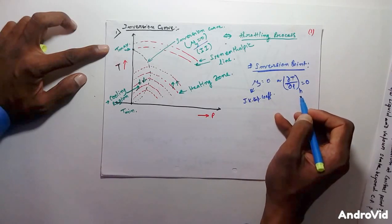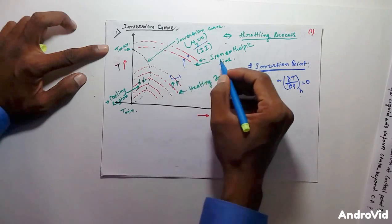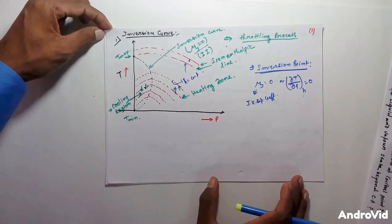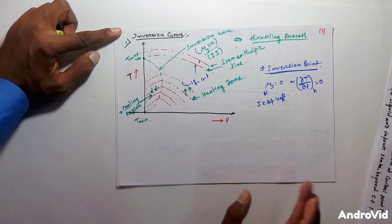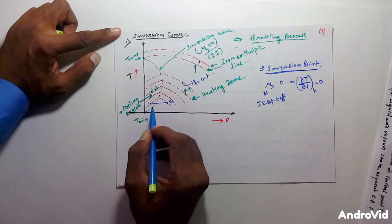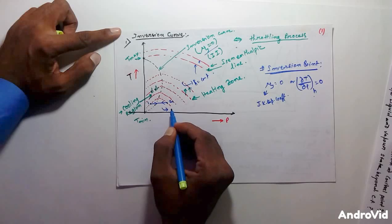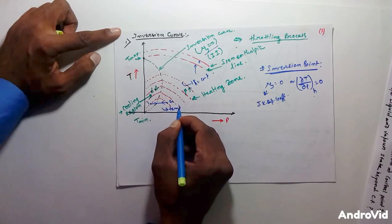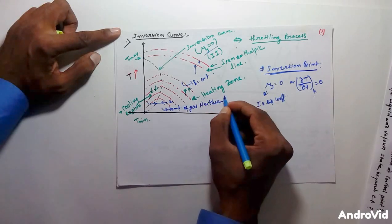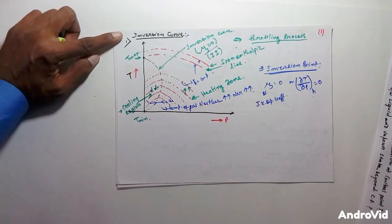Along every point of this inversion curve, del T by del P at constant enthalpy is zero. The red color lines represent constant enthalpy, meaning H equals constant. One important thing I forgot to mention: if we take two points — point one and point two — whether we move from point one to two or from two to one, the temperature of the gas neither increases nor decreases.